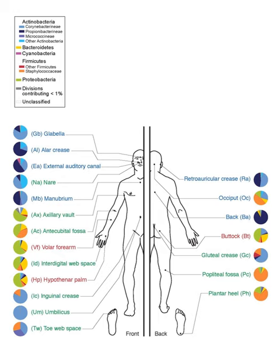Ed Yong, I Contain Multitudes: The Microbes Within Us and a Grander View of Life. 368 pages, published 9 August 2016 by Ecco, ISBN 0062368591.